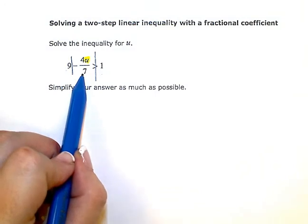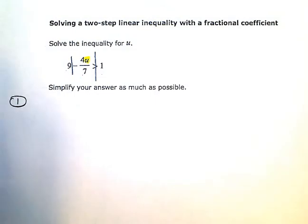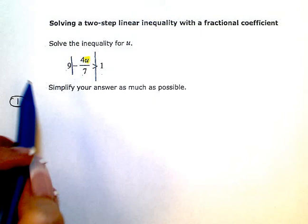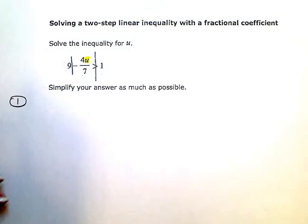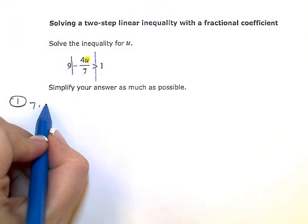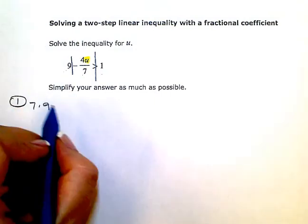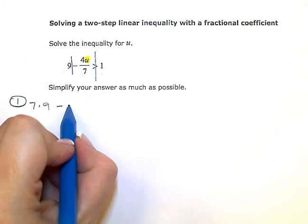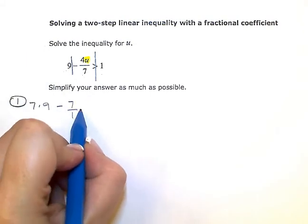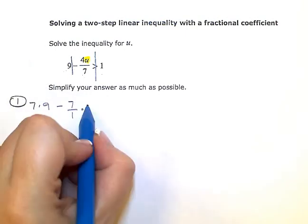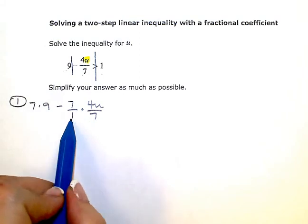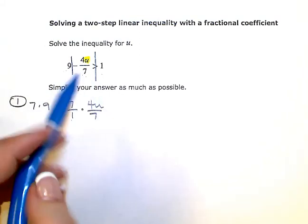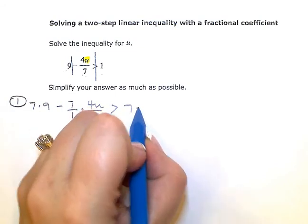I'm going to show two different ways to solve this problem. This will be Method One: we're going to clear the fraction first. Since my denominator is seven, I need to multiply every term on both sides of the inequality by seven. So I'm going to have seven times nine as my first term, then minus seven over one times the next term, which is greater than seven times one on the other side.